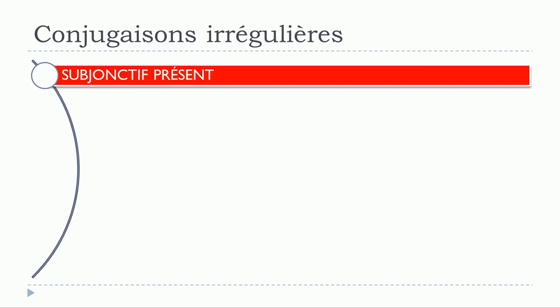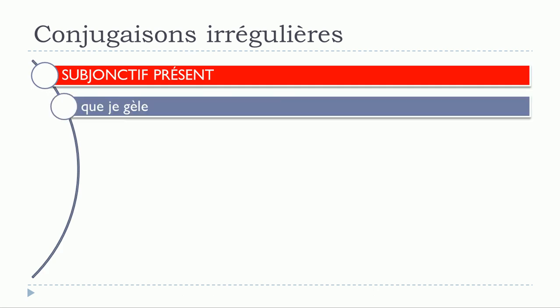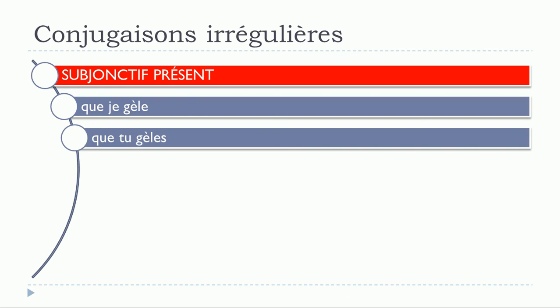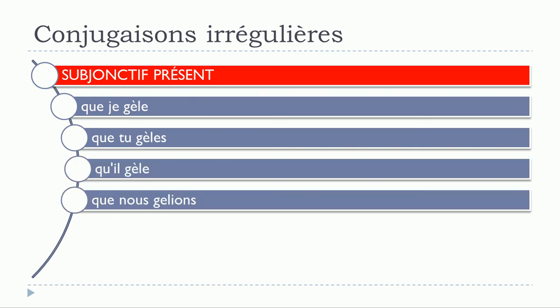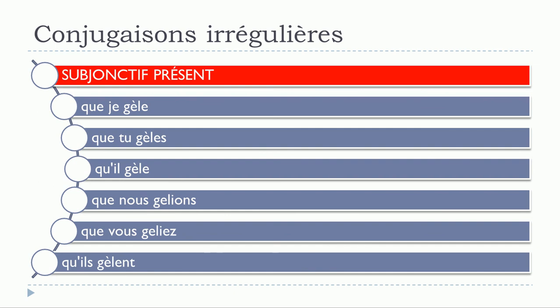For the subjonctif présent, it will go like: que je gèle, que tu gèles, qu'il gèle, que nous gelions, que vous geliez, qu'ils gèlent. The modification will concern je, tu, il and ils. For nous and vous you don't modify it — you just keep it like that and put the normal endings for the subjonctif présent.